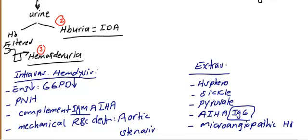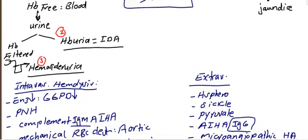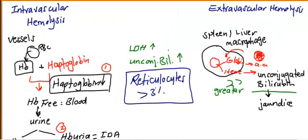Microangiopathic hemolytic anemia, such as in DIC, can be either extravascular or intravascular depending on the case. As a clinical example, if a patient has hemosiderinuria and decreased haptoglobin level, think of intravascular hemolysis causes such as PNH, G6PD deficiency, or IgM autoimmune hemolytic anemia. Remember, LDH and unconjugated bilirubin can be increased in both, but unconjugated bilirubin is greater in extravascular. If reticulocyte count is increased, that indicates hemolytic anemia.